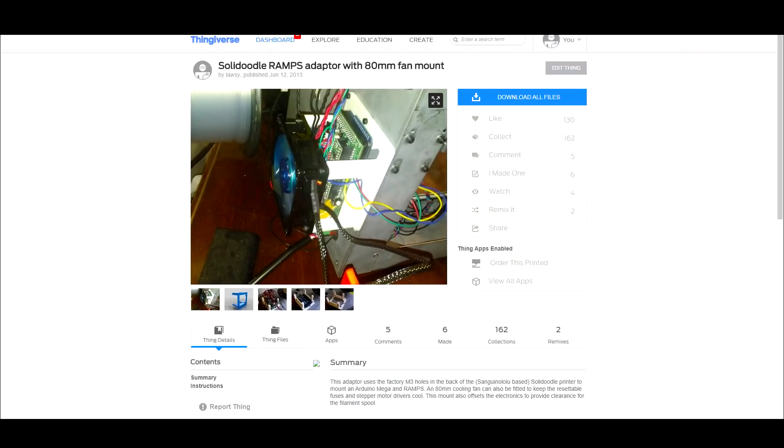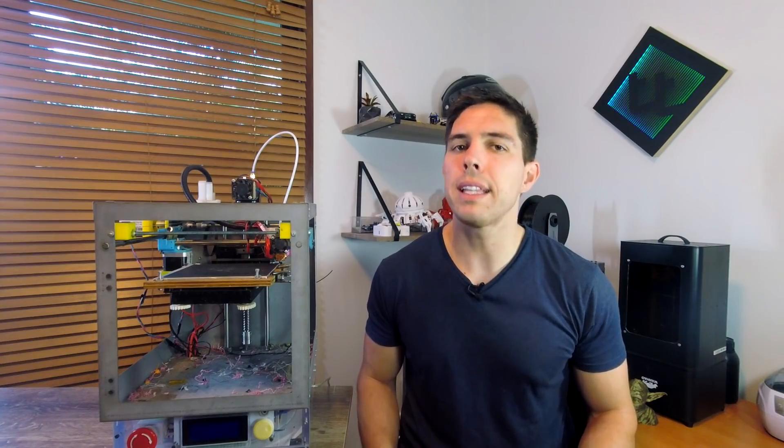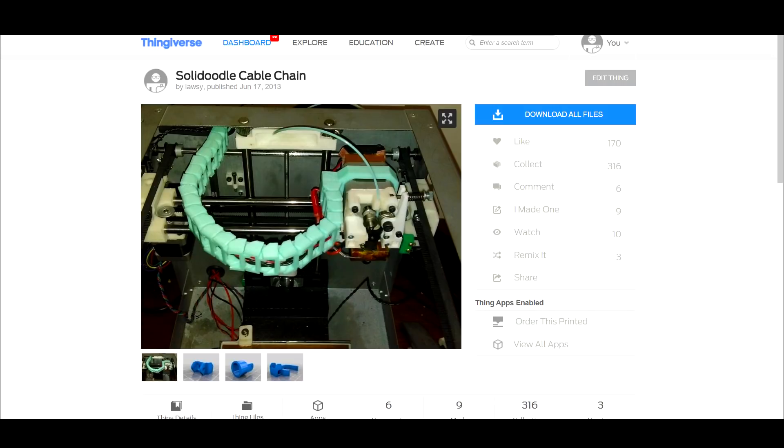I decided I wanted to upgrade the electronics to RAMPS, so turned my attention to an adapter so it could mount in the factory spot on the back of the case. After this I went completely bonkers because I decided I wanted to redesign all of the factory gantry and carriages. I then modified a cable chain that I found on Thingiverse to suit the Solidoodle and everything was looking pretty cool.